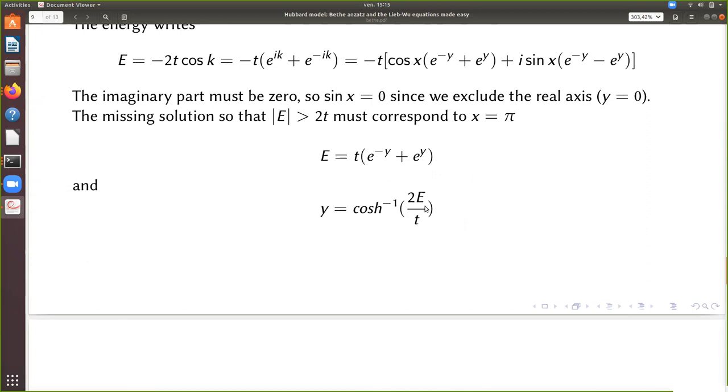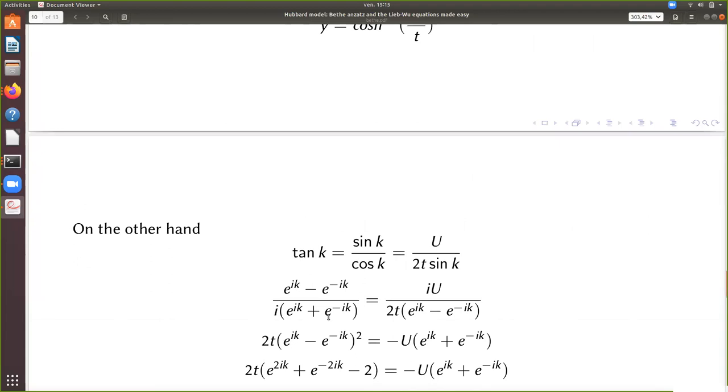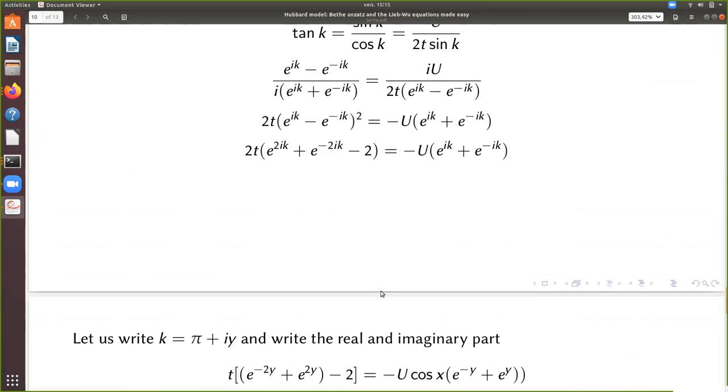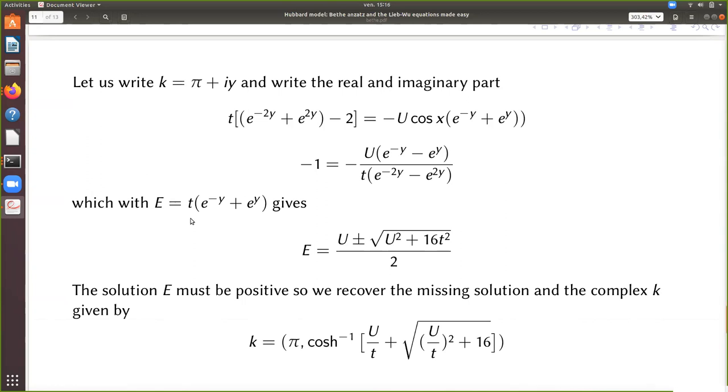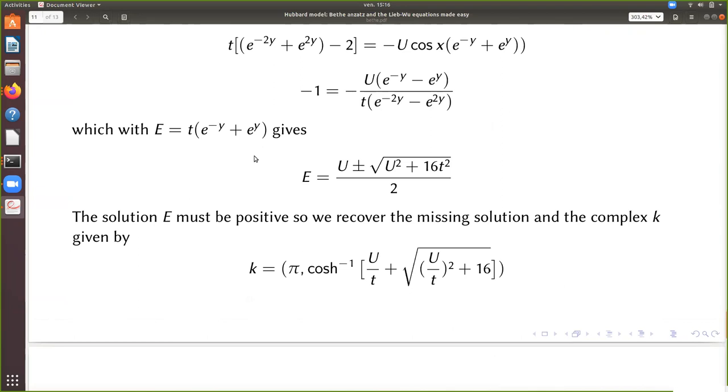So we need to have sinus of x equals zero. So the missing solution must be related to x equal pi. So I inject pi here. And I get the energy like that as essentially the hyperbolic cosinus of y. So it can give me y as a function of E. So the imaginary part in the complex plane of k has this behavior. So I adjust the math in order to get the energy. And the equation gives you a solution where you must have plus. And here is the location of the complex k in the complex plane, which gives you the missing solution. So the two solutions to singlet state with non-trivial solution is one with k on the real axis and the other one in the imaginary plane.